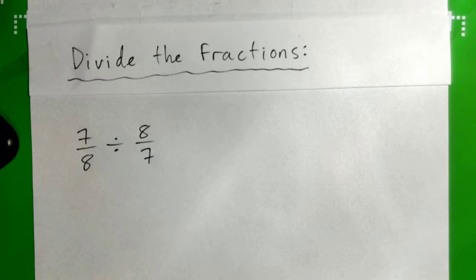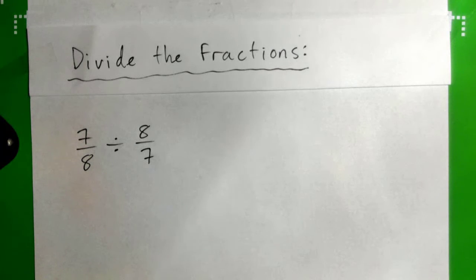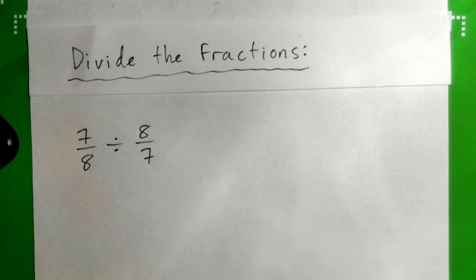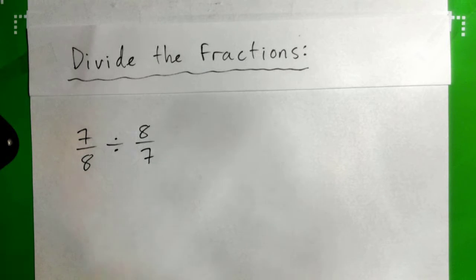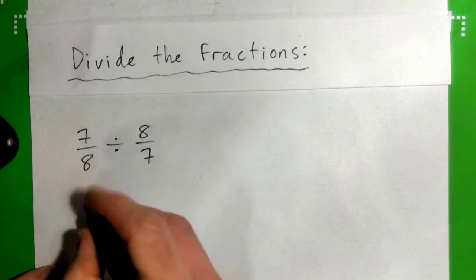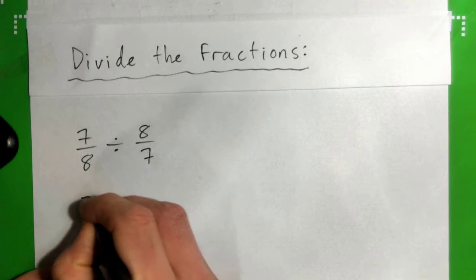So we have 7 eighths divided by 8 sevenths. When we divide fractions, we can flip the fraction on the right and multiply.